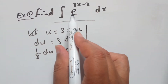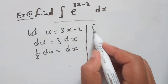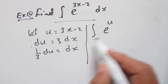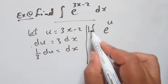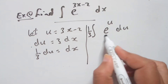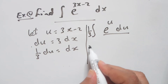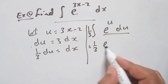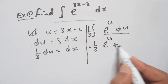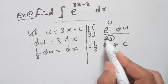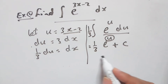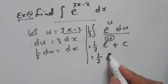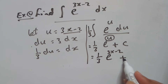Now you can rewrite the given integral: e to the power 3x becomes e to the power u, and dx becomes one-third du. Applying the rule, the integral of e to the power u du equals e to the power u itself, and one-third is a constant, then add c. Replacing u by its value gives one-third e to the power 3x minus 2 plus c.